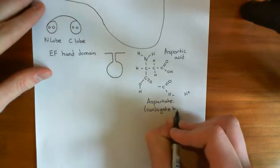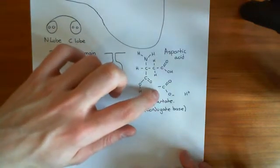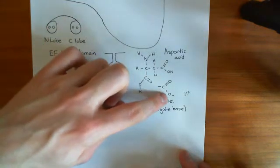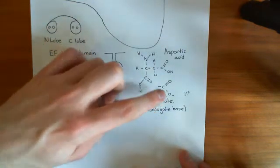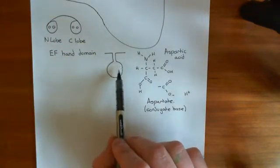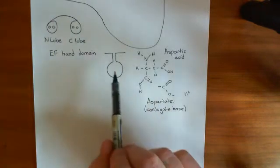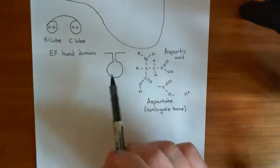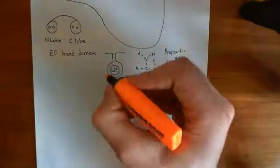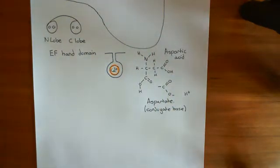When you have an acid molecule, by definition it is capable of giving up a proton. The structure left after donating the proton can no longer give up a proton, so it's no longer an acid; it's actually a base because it can accept a proton back. That's why it's known as the conjugate base. So when you put lots of acidic side chains in the EF-hand loop, some will lose their proton and become negatively charged. Calcium is a divalent cation with two positive charges.